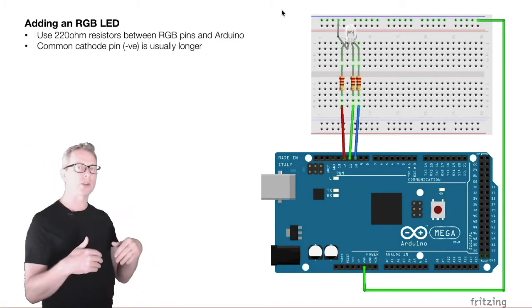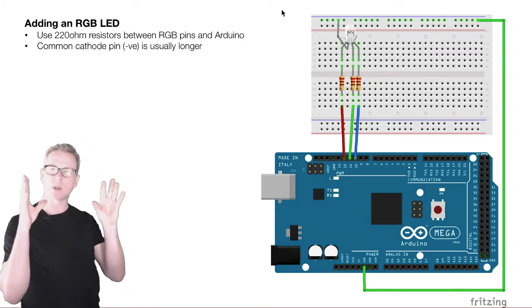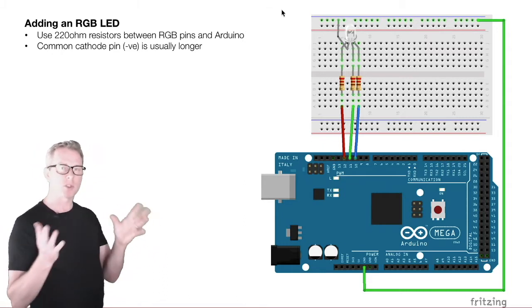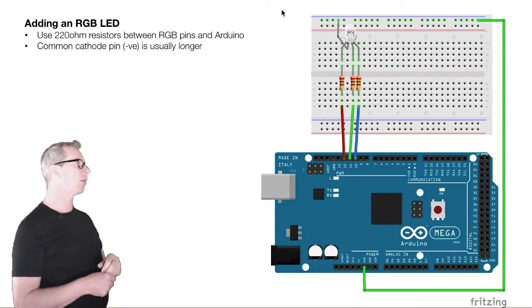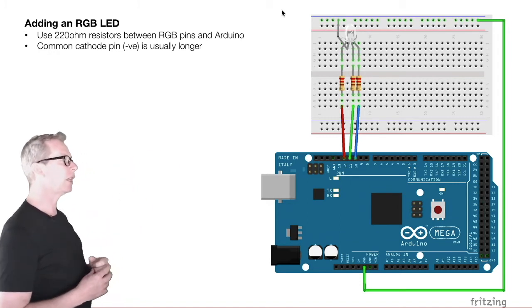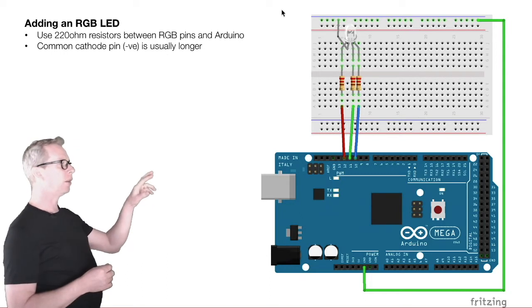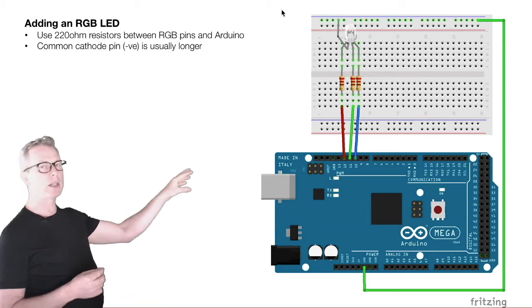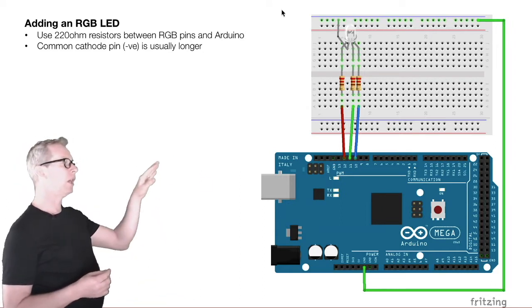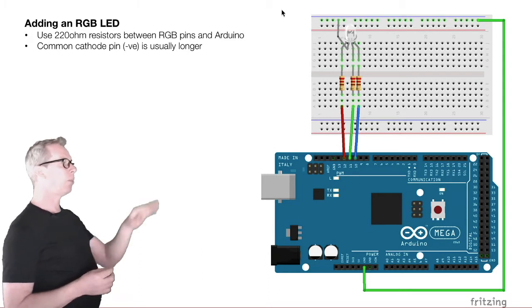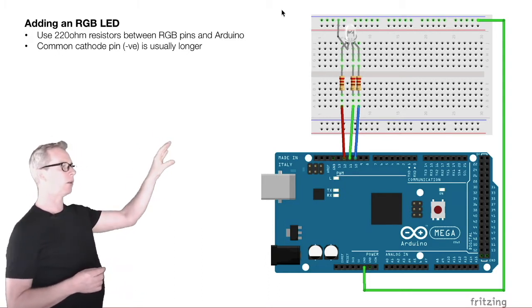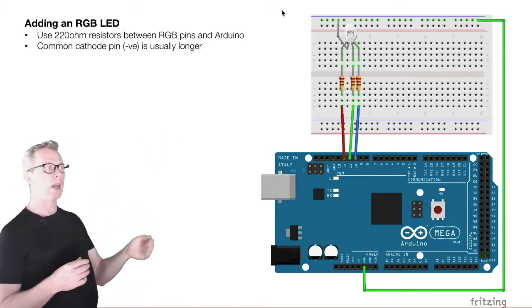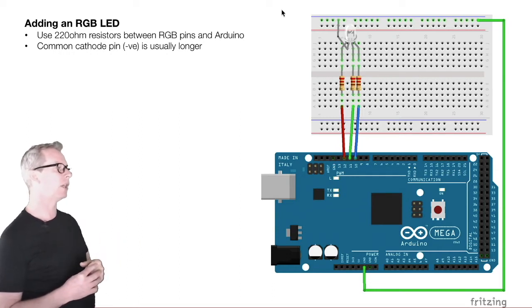I'm going to run through some refresher examples just to make sure you understand how the Arduino works and how we hook it up. The first thing I'm going to do is add an RGB LED to the Arduino. We just hook up the three data pins from the bottom of the RGB LED into the PWM pins on the Arduino — I'm going to use pins 10, 11, and 12. I put a 220-ohm resistor in between the hookup wire and the legs of the LED, just to protect the LED and the Arduino.